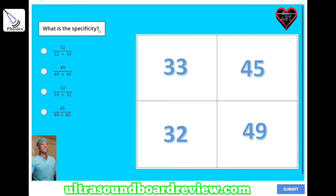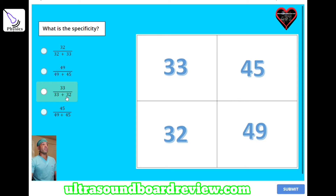What is the specificity? A: 32 divided by 32 plus 33, B: 49 divided by 49 plus 45, C: 33 divided by 33 plus 32, or D: 45 divided by 49 plus 45? The answer is B, 49 divided by 49 plus 45.